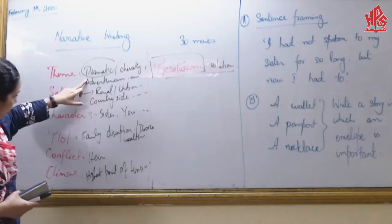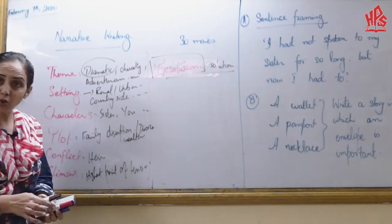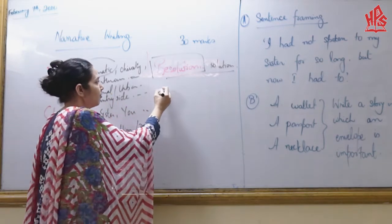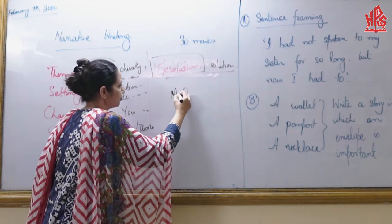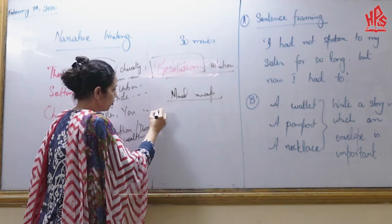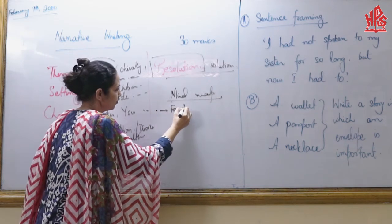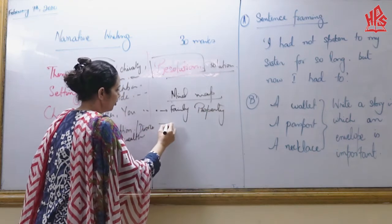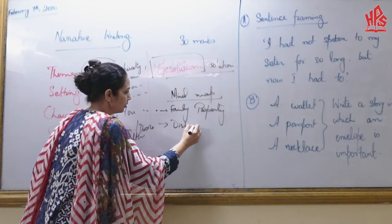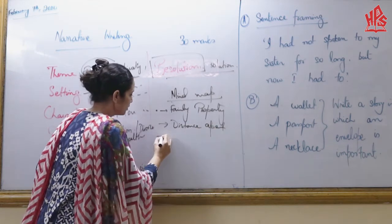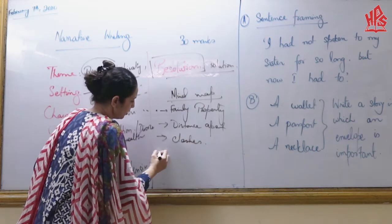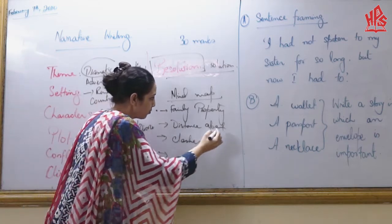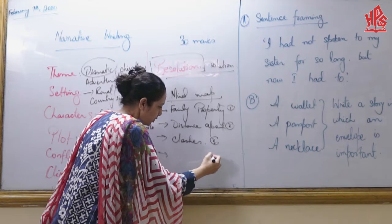So in other words, the better thing is always to do your map. If you can do a structured plan, pretty good. If not, it's always good to do a mind map. For example, write down: family property, distance apart, clashes. The more you put into this particular small words in the mind map, the more it becomes easier to make your paragraphs. Once you are done with it, you can think about the dialogue framing and the climax.